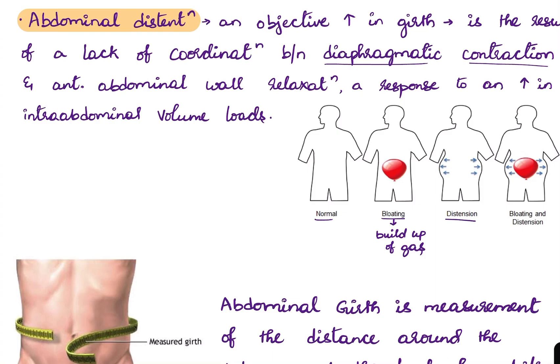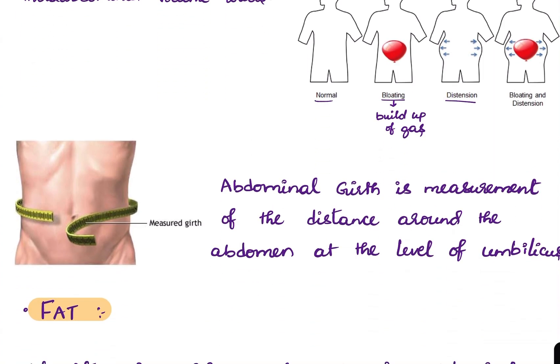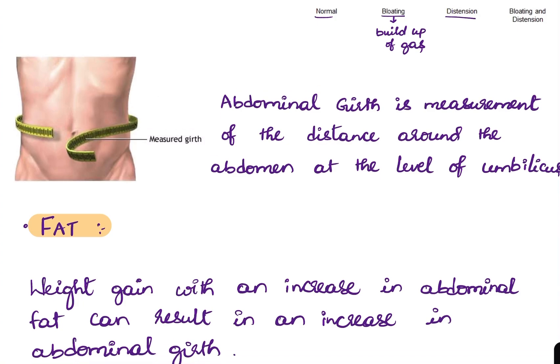Abdominal girth is measured as the distance around the abdomen at the level of the umbilicus.